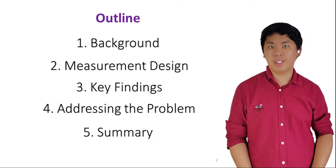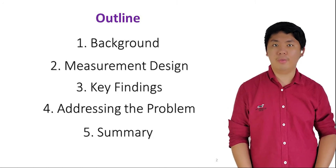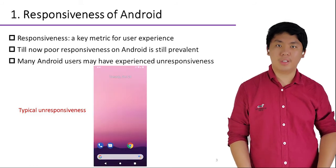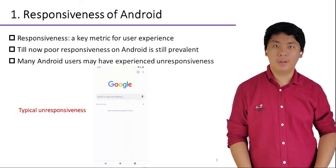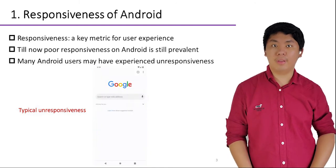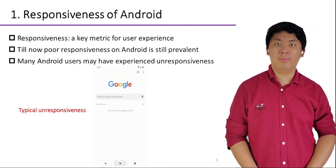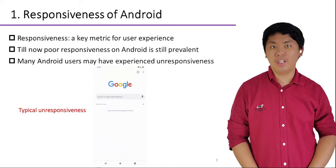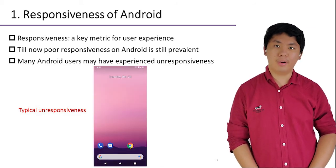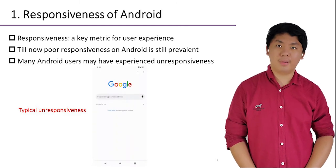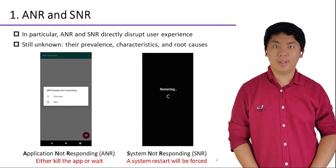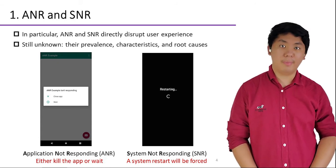Let's begin with some basics and real-world examples of the problems we face. Responsiveness is among the key metrics that determine user experiences. Despite years of efforts, Android users are still often troubled by poor responsiveness, which negatively impacts productivity, satisfaction, and engagement. If you are an Android user yourself, you may find this topic rather familiar. In particular, two types of unresponsiveness have the most disruptive impact.